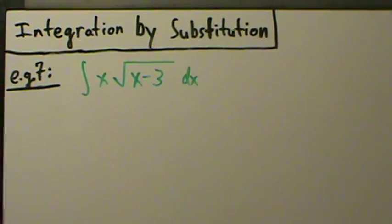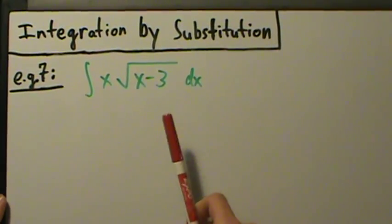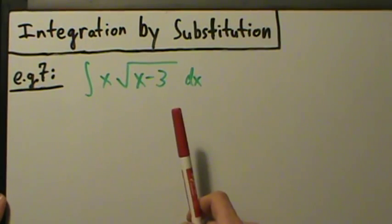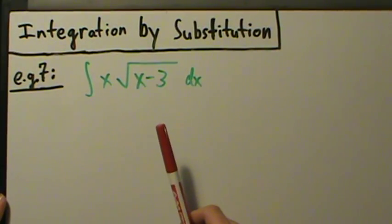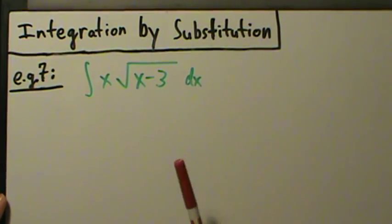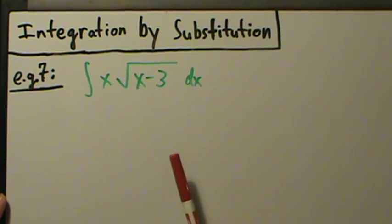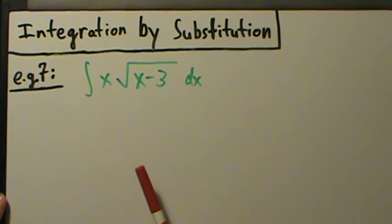Here's example 7 with integration by substitution. This one's a little bit trickier than some of the other ones because we have to do something a little bit different. But it's really not too bad. We can still follow that same general pattern that we've been following, which is to look for a function and a constant multiple of its derivative.